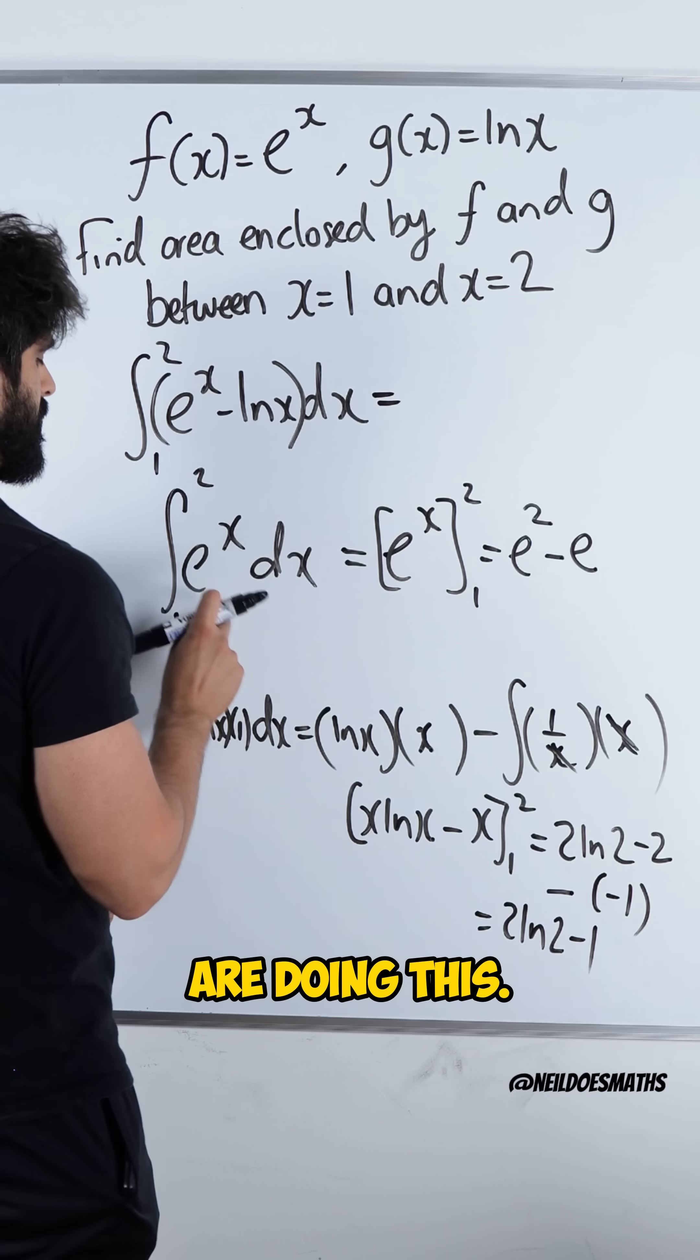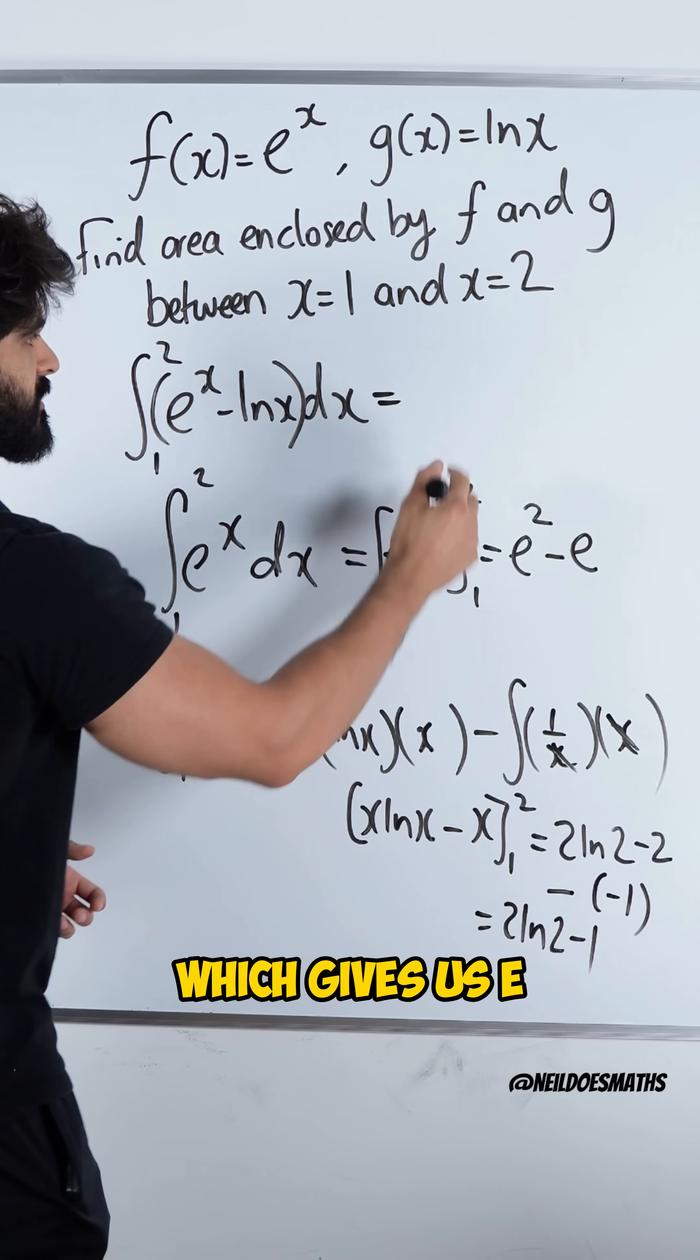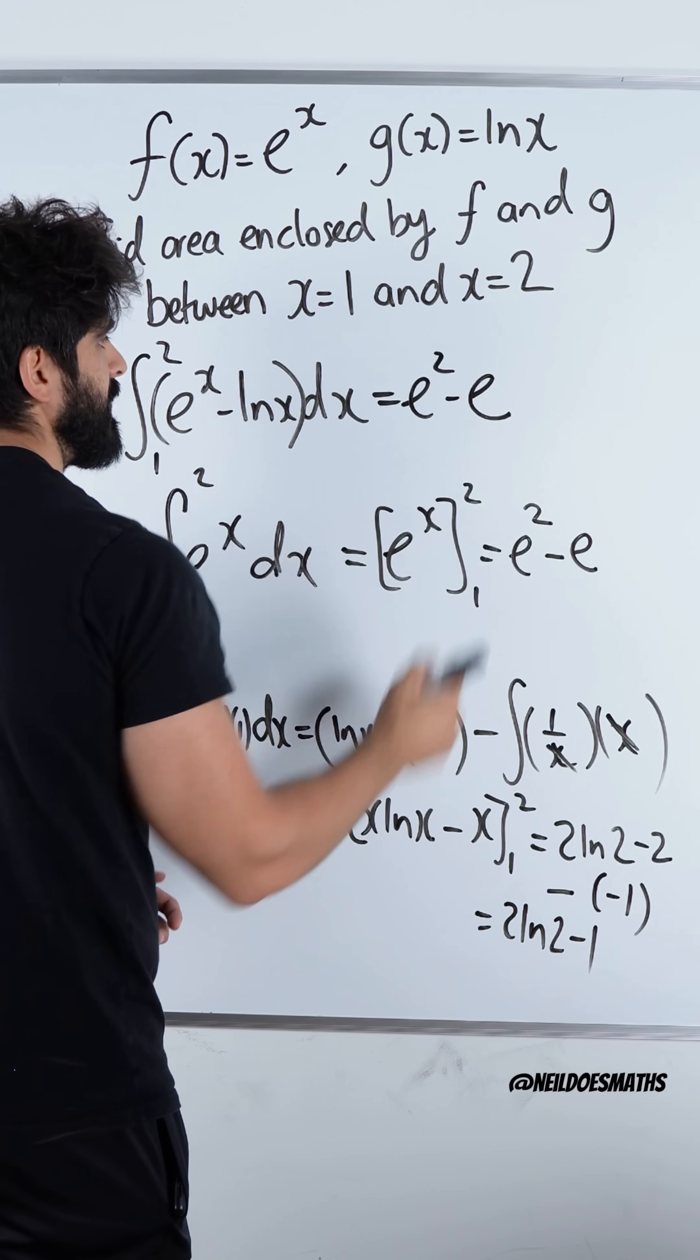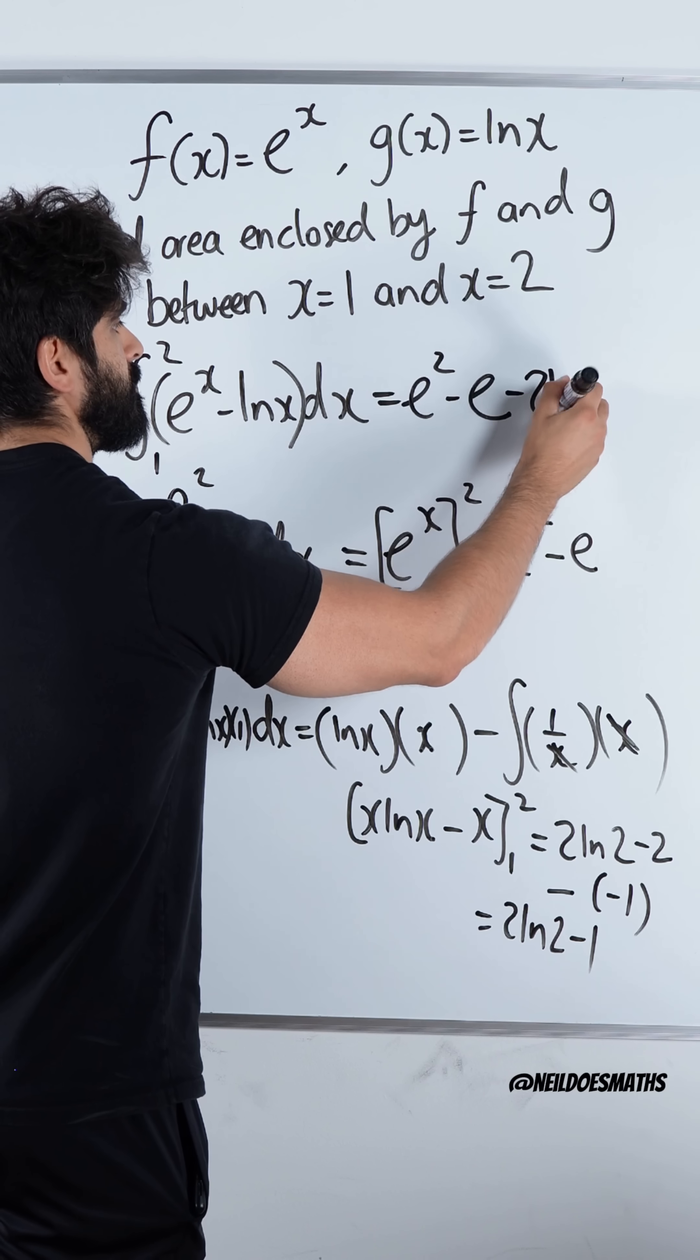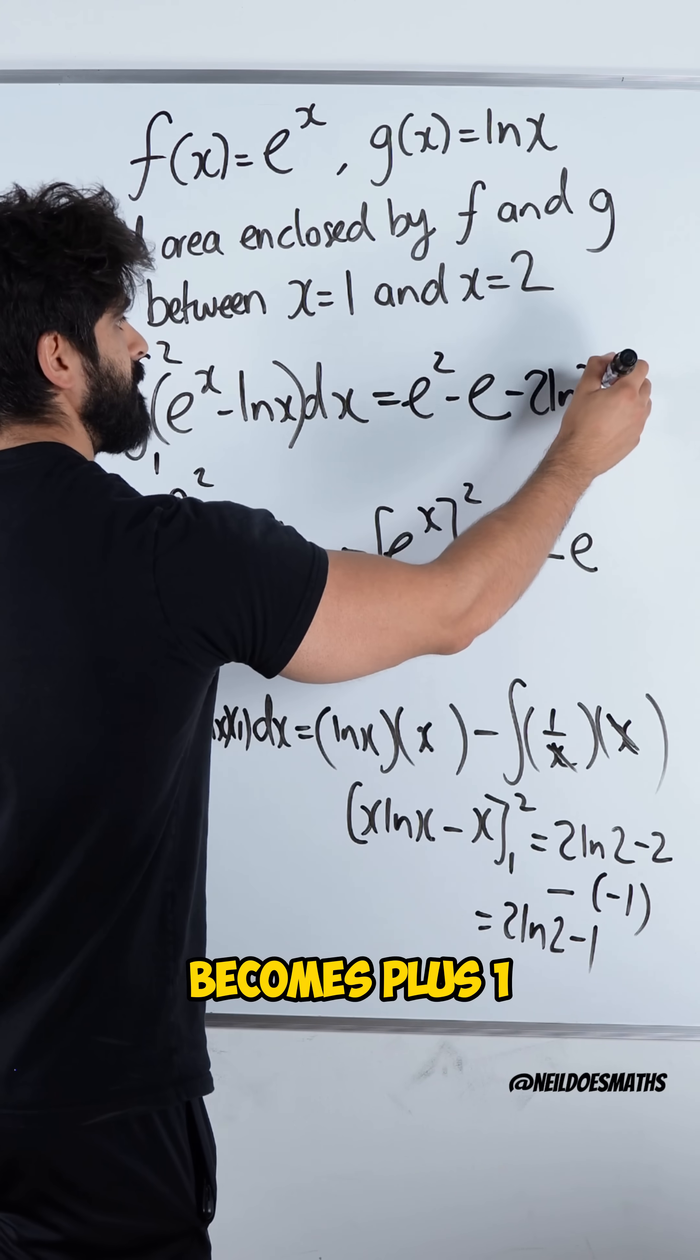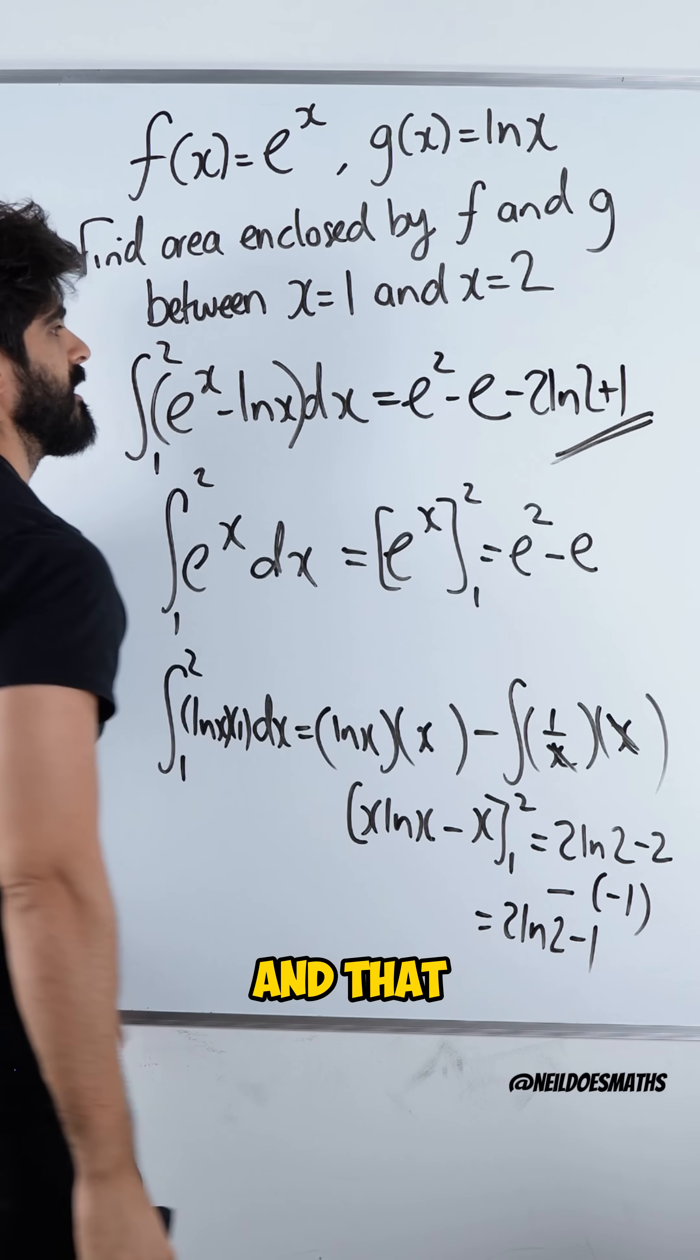So to conclude, we are doing this, take away this, which gives us e squared minus e, take away this. It will be minus 2 ln 2. Then the double minus here becomes plus 1. And that is our answer.